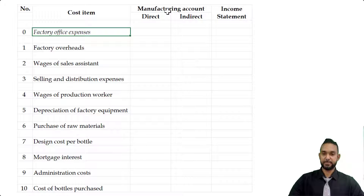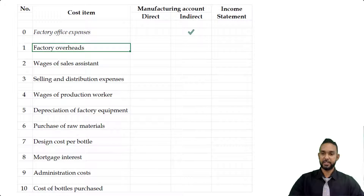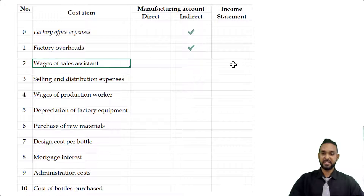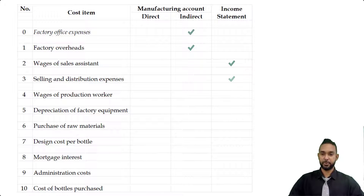Factory office expenses is a manufacturing expense, but it is indirect, so we're going to put a tick in that column. Next, factory overheads — that is also manufacturing, and it literally tells us it's overheads, so overheads is automatically indirect. Wages of sales assistant — that's non-manufacturing, so it can only be in the income statement. Then we have selling and distribution expenses, also non-manufacturing, so income statement.